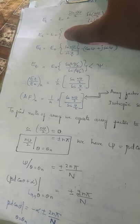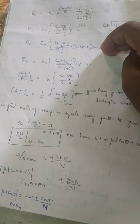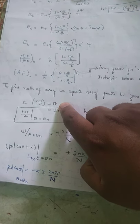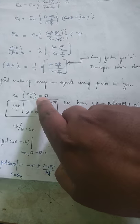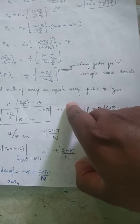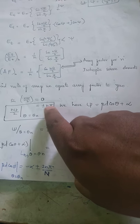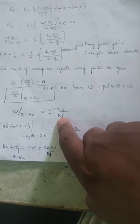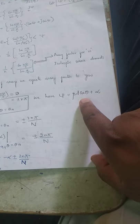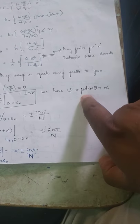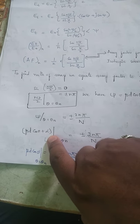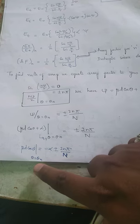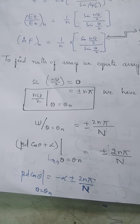Now we have the array factor. We want to find the null points. For finding the null, we equate the same factor to zero. The given factor is sin(N·chi/2) equated to zero, because we want to find the null point (minima). To get the null point, sin(N·chi/2) = 0 gives N·chi/2 = ±N·pi in general form, so chi equals 2·N·pi / N (using capital N for the order). We know chi equals beta·d·cos(theta) plus alpha.